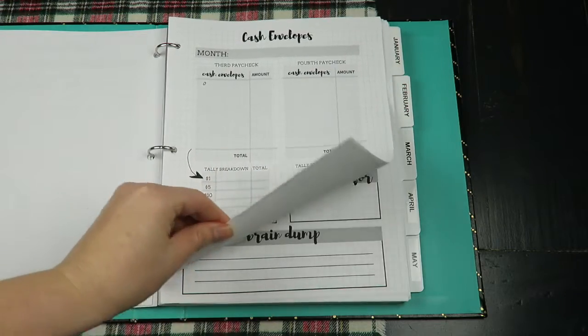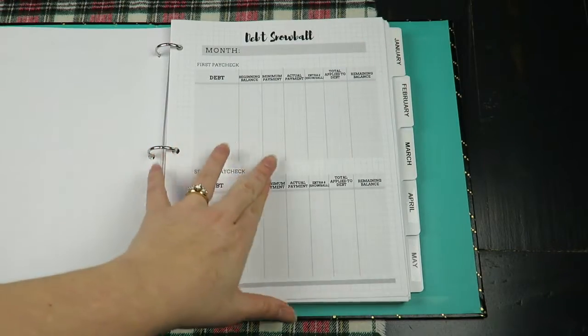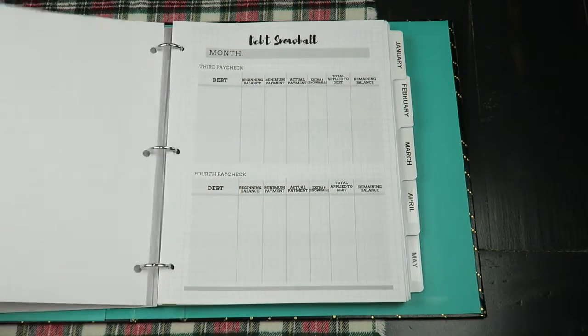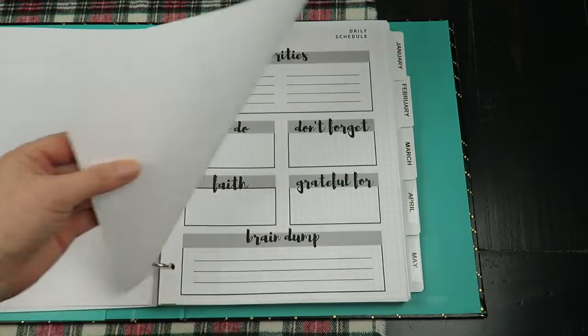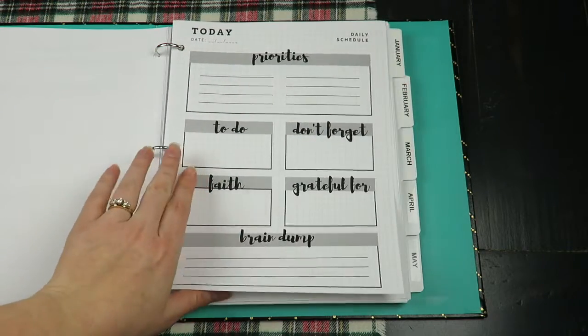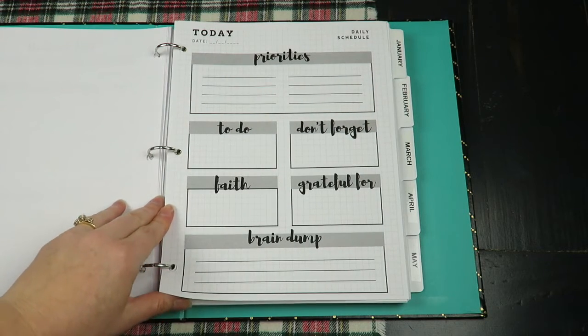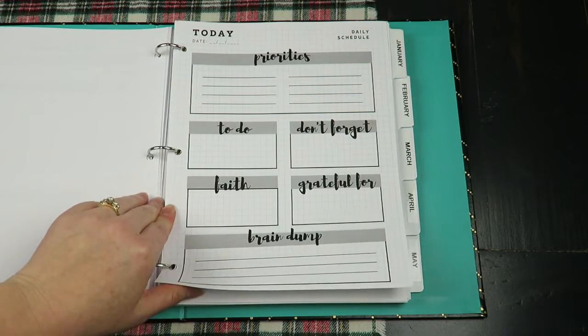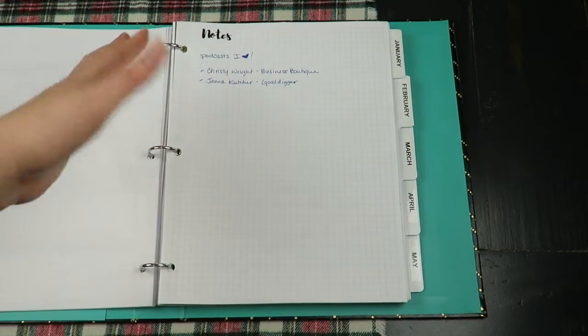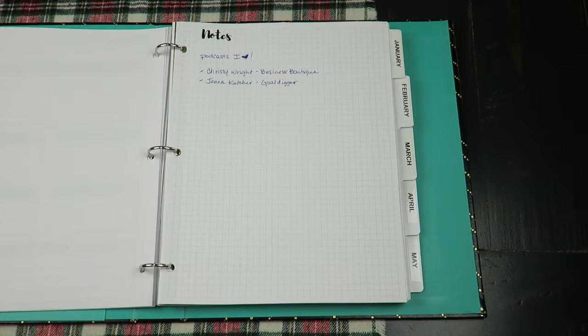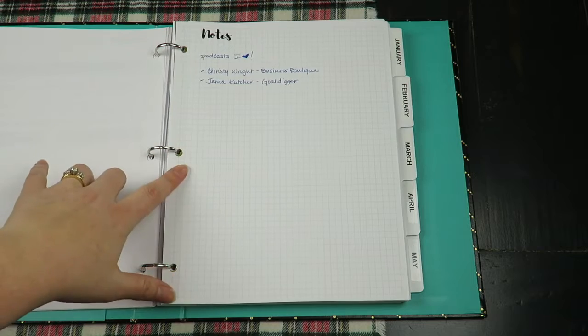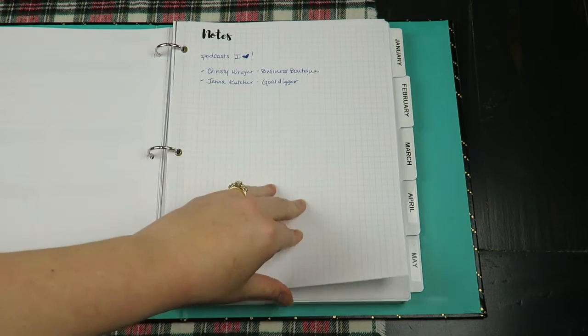Debt snowball, I cannot wait to fill this out in January. That's part of our plan to start January strong, is to really hit our debt like crazy. Priorities, this is for days when I'm just gonna lose it and I'm overwhelmed. I will fill out this paper throughout the month, guaranteed. And then notes, just notes, podcasts that I'm loving right now, scripture that I need to hear. I like to leave notes to myself. I could also move this page to wherever I want in this month.